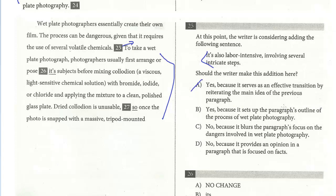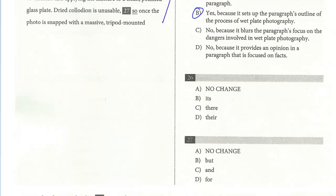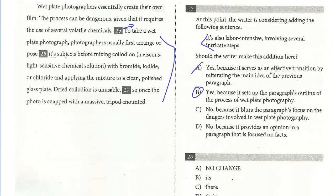Looking at the choices: option A says it serves as an effective transition by reiterating the main idea of the previous paragraph — not accurate at all. Option B says yes, because it sets up the paragraph's outline of the process of wet plate photography. This looks good — it does set up the outline, noting dangerous chemicals and lots of steps. B is the answer for question 25. Question 26 is a grammar question: 'photographers usually arrange or pose its subjects' — whose subjects? The photographers'. 'Its' with an apostrophe is a contraction meaning 'it is,' which doesn't make sense. The correct answer is 'their' — possessive — so the answer is D.